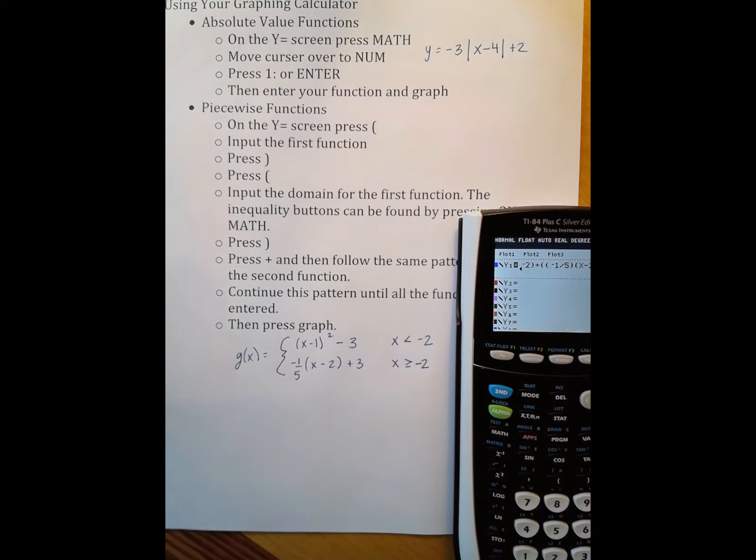I'm going to put my second subdomain. So I have parentheses again, x. This time I need greater than or equal to. So I go to second math or test. Greater than or equal to is 4. And then I say negative 2, close parentheses, and tell it to graph it.